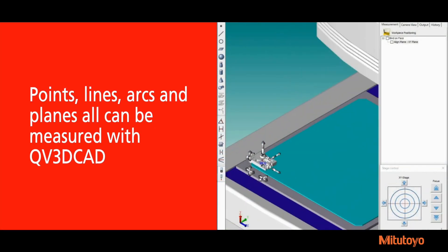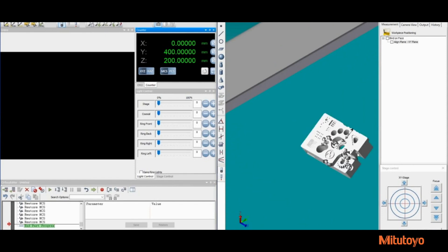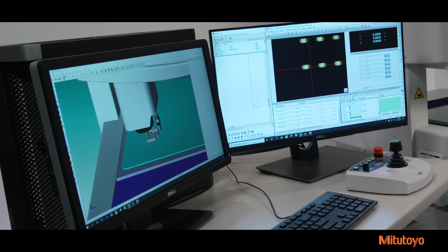Points, lines, arcs and planes all can be measured with QV3D CAD. Once defined in QV3D CAD, measurements can be simulated in offline mode or immediately measured in online mode.